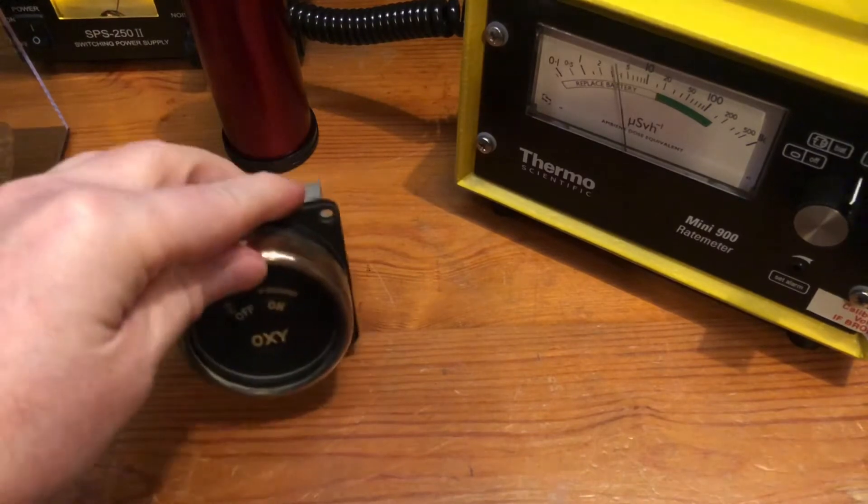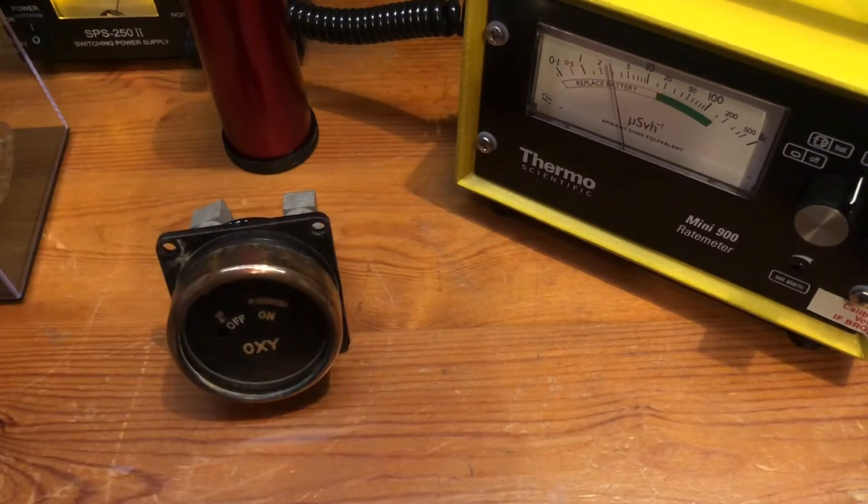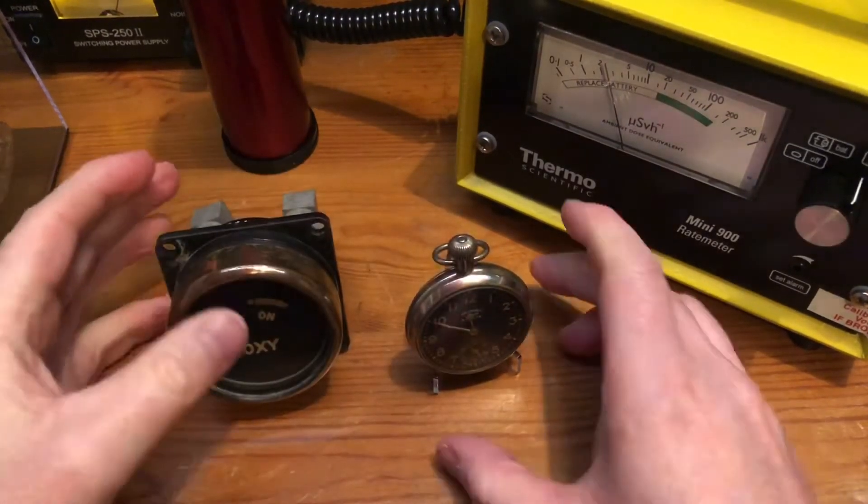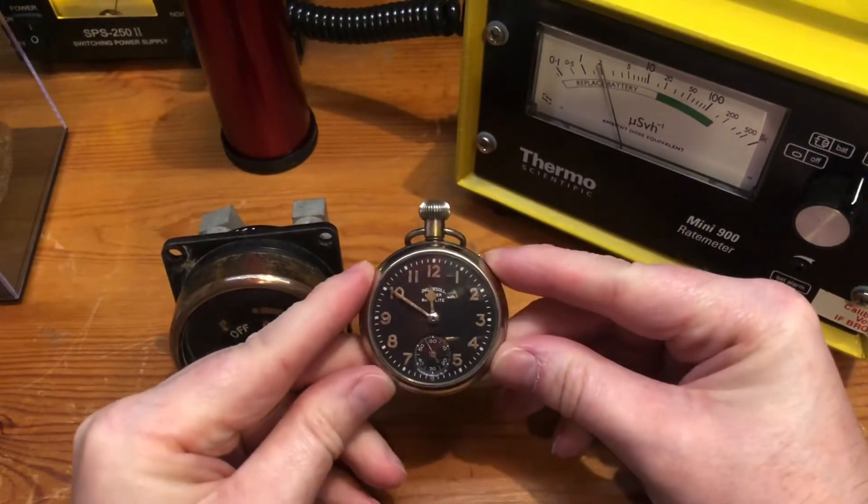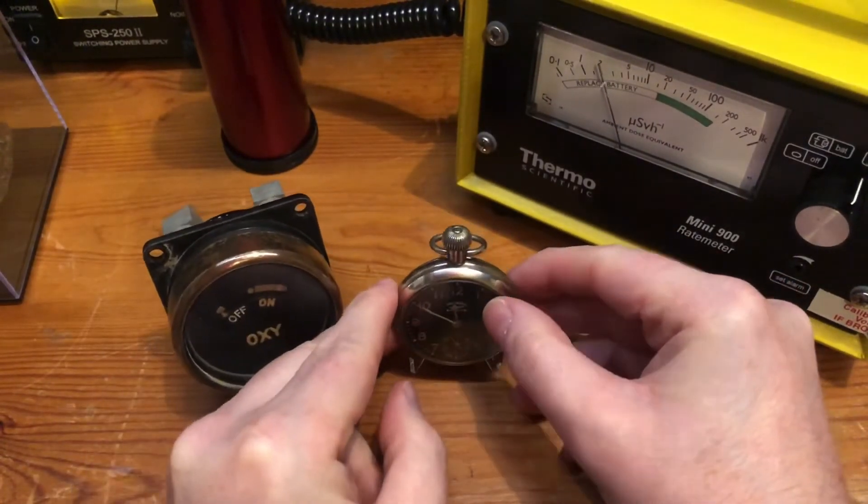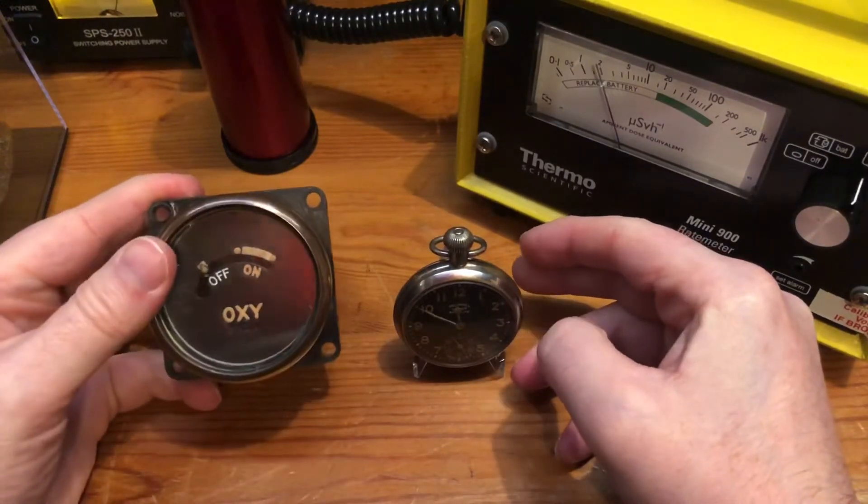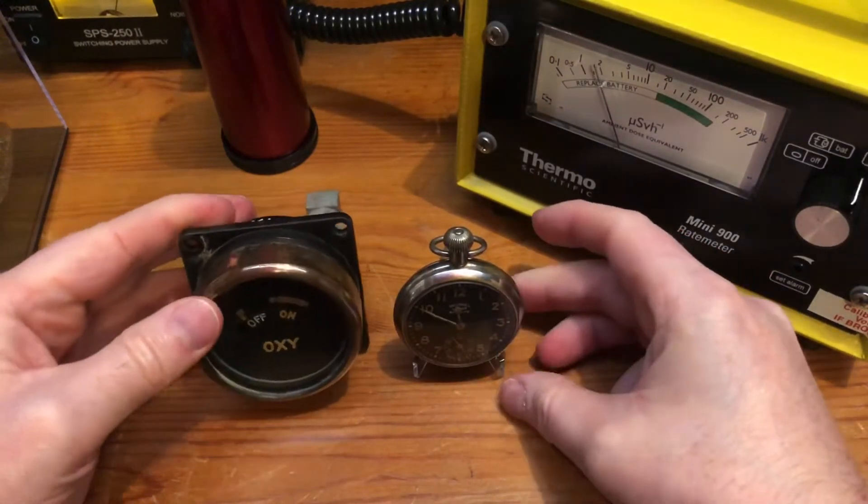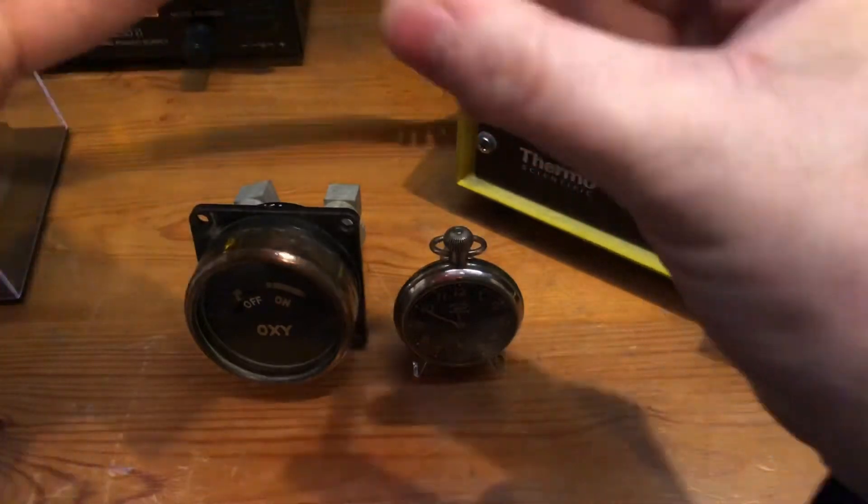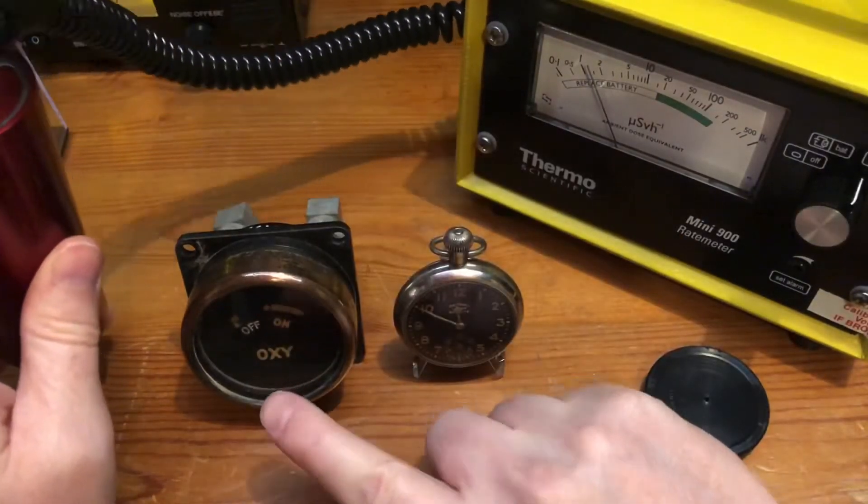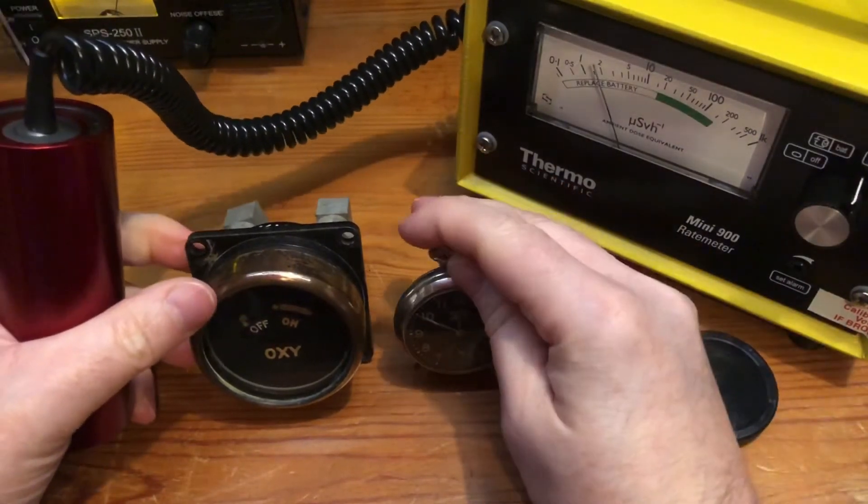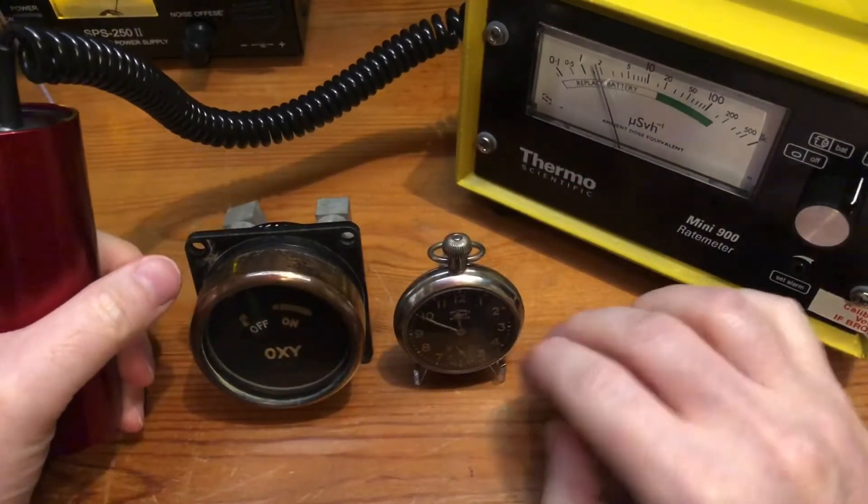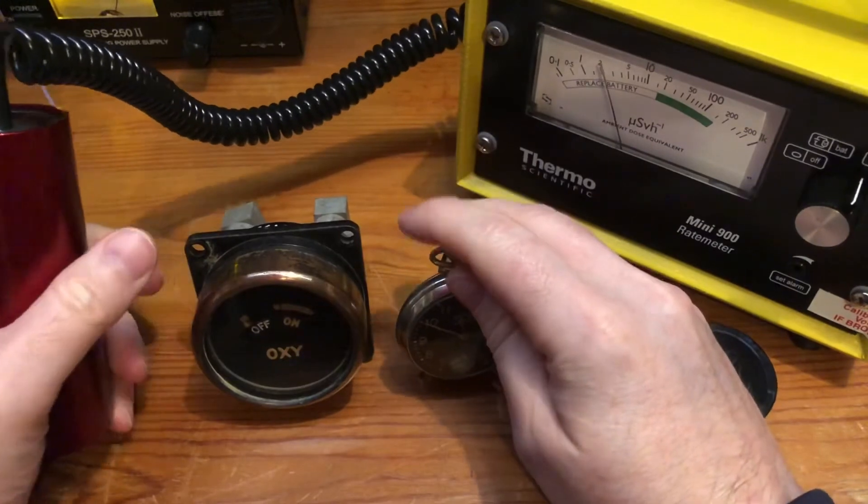So next I have radium painted dials. I have an Ingersoll light radio light that dates from just after the First World War, and then I have a Second World War oxygen sensor from a Spitfire. Radium was used to make the dial glow in the dark, so basically it sucked up all the UV rays and it would then glow at night.